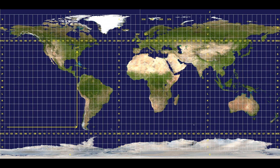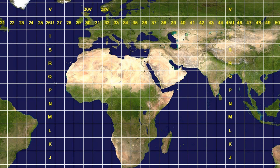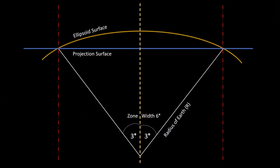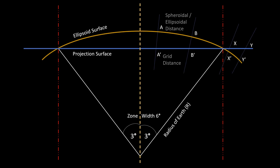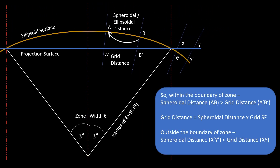The UTM coordinate system divides the earth into 60 zones, each 6 degrees of longitude wide. Here is my projected grid surface in blue and the ellipsoidal surface in light brown. The distance between A and B — the spheroidal or ellipsoidal distance — will be greater than A-dash to B-dash, or the grid distance.